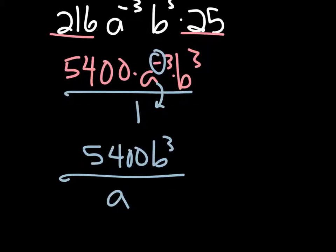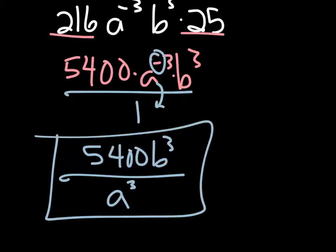and because the negative moved it down there, now the exponent is positive. And this is our simplified answer.